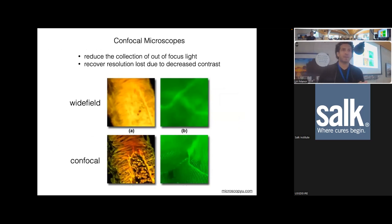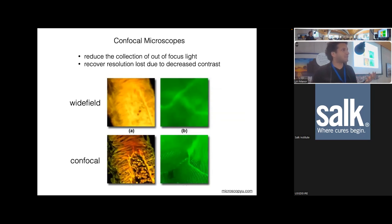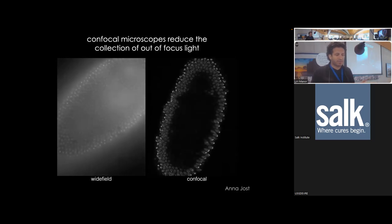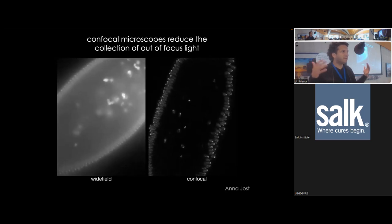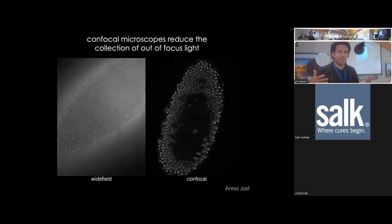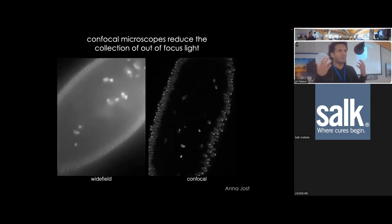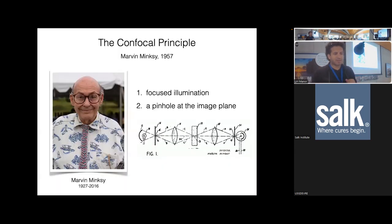Confocal microscopes were developed to help us deal with that — to improve image resolution by reducing out-of-focus light and increasing contrast. Here's a beautiful example: on the left, a sample imaged with a normal wide-field microscope; on the right, a confocal — much higher contrast and effective sharpness. This confocal system was first developed by Marvin Minsky. The concept is simple: if you put a pinhole in the image plane, you can filter out most of the out-of-focus light.